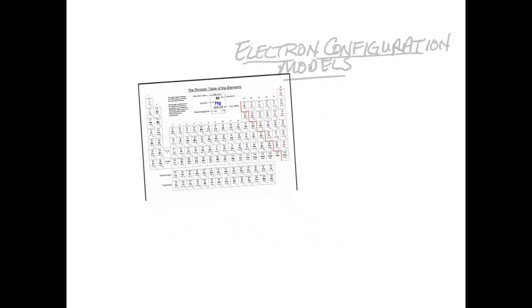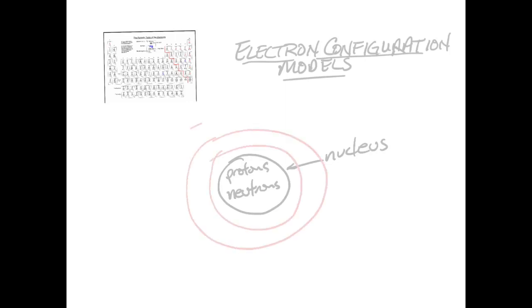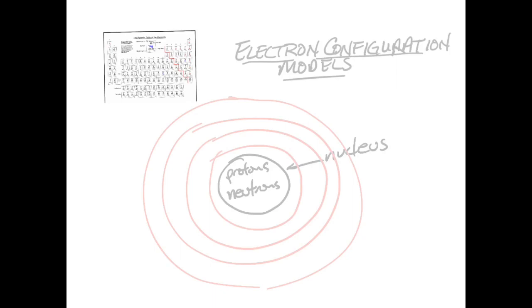First, a little bit of review. The atom is composed of a nucleus, and inside the nucleus are protons and neutrons. Around the outside of the nucleus there are electrons traveling in energy levels. Each of these rings represents a different energy level of electrons. The largest atom contains about seven energy levels.